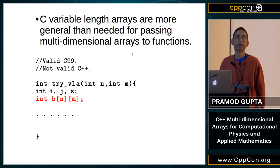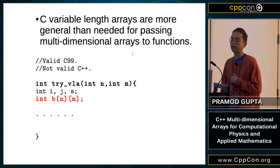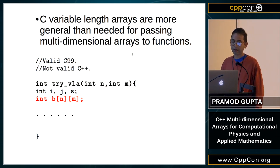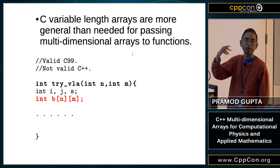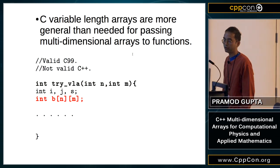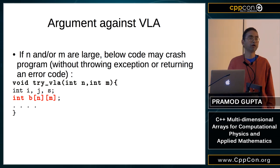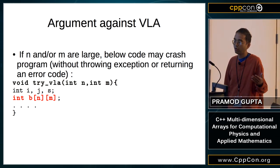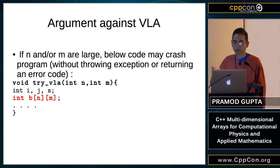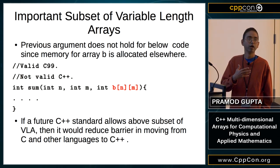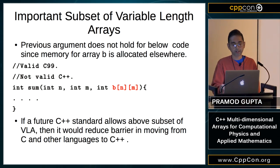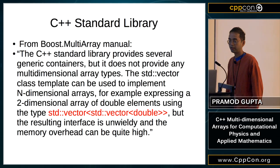C Variable Length Arrays are more general than needed just for passing multi-dimensional arrays to functions. The argument against VLAs is that if N and M are large enough, the code can crash without throwing an exception or returning an error code. But that argument doesn't hold just for passing arrays to functions, because that memory has been allocated somewhere else. If a future C++ standard allowed this subset of VLAs, it would really reduce the barrier in moving from C to C++.